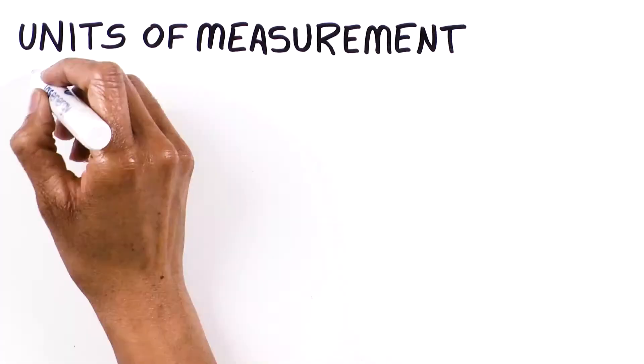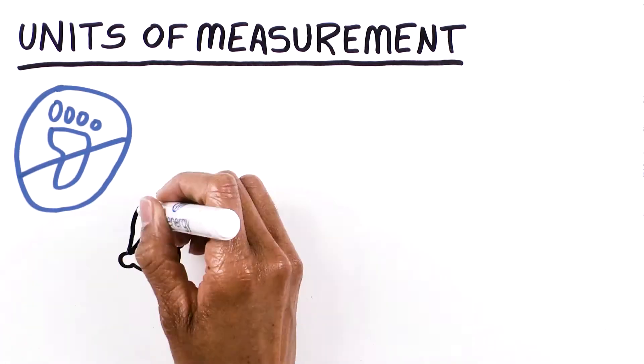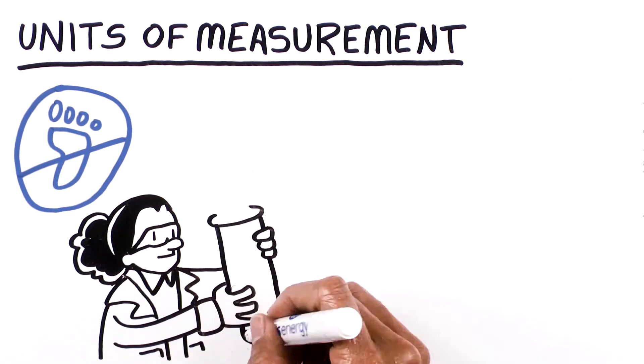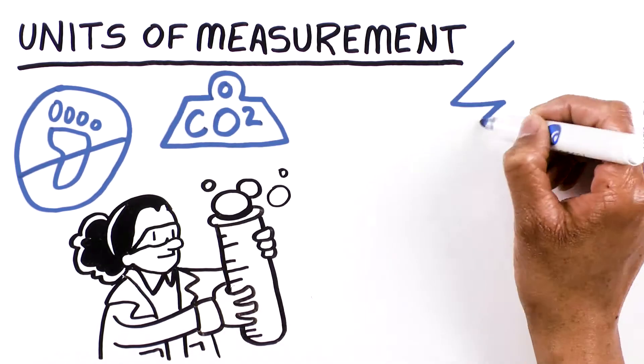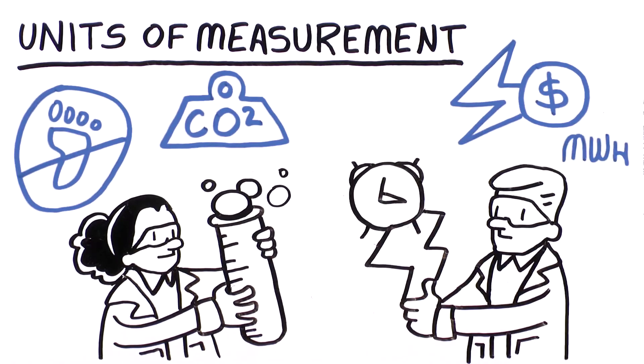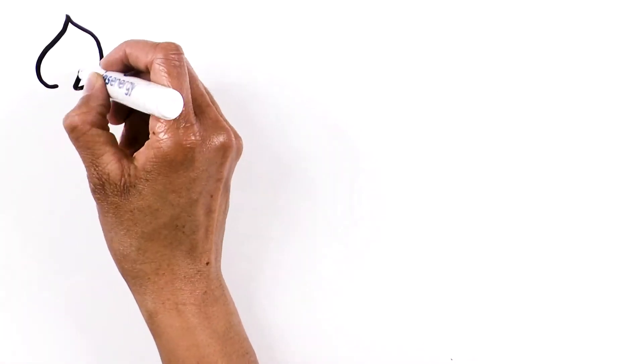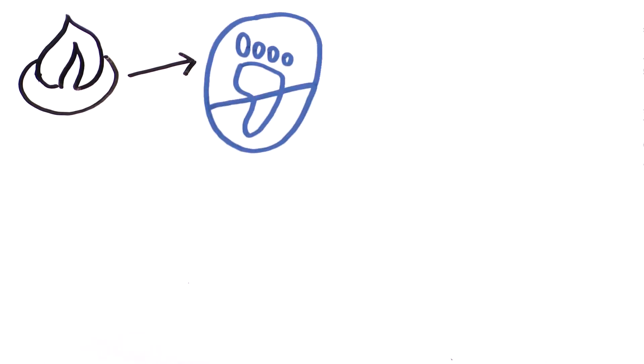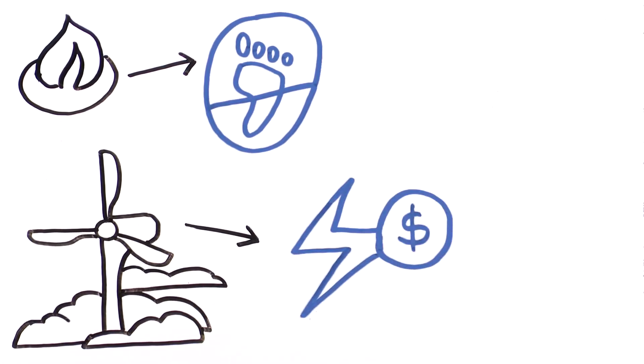1. Units of Measurement. Carbon offsets are measured using equivalent metric tons of CO2. RECs, on the other hand, are measured in megawatt-hours, or MWH. Our carbon-neutral natural gas uses carbon offsets, while our green electricity uses RECs.